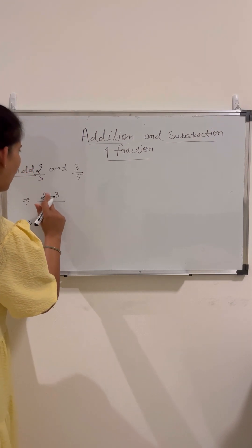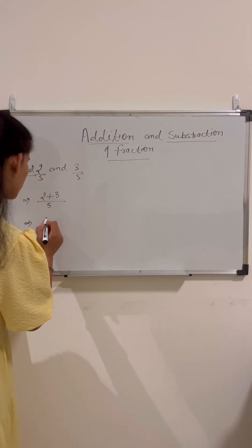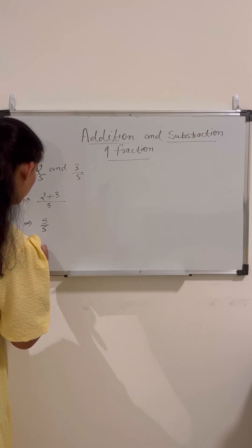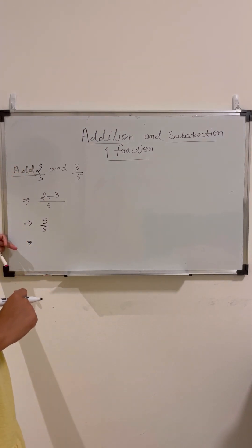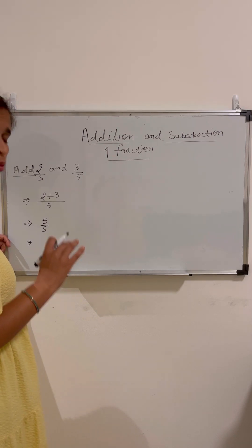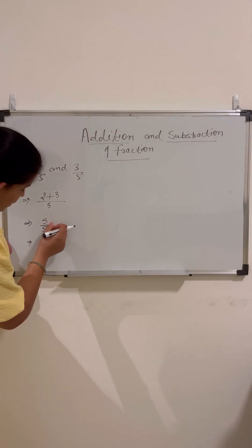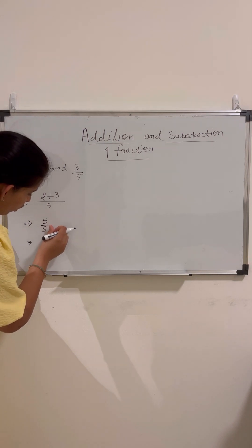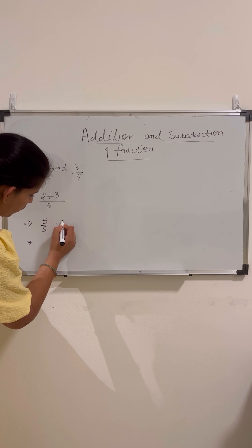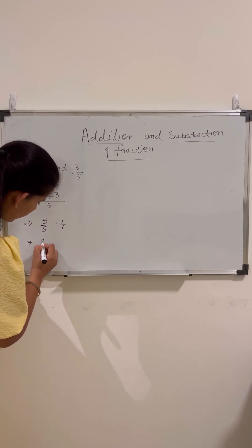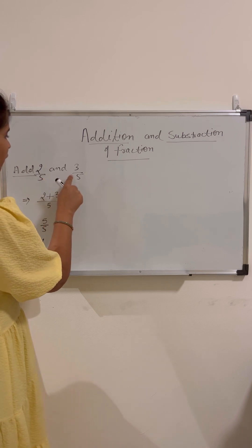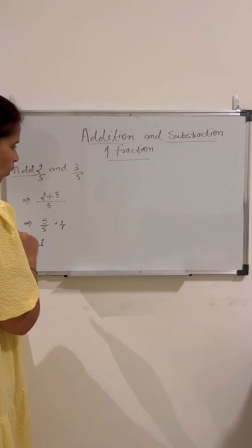So if we add 2 plus 3, we get 5 by 5. In fractions, we are supposed to reduce it to the smallest form. The common factor of both 5s is 5, so 5 divided by 5 gives us 1 by 1, which means 1. So the sum of 2 by 5 and 3 by 5 is 1.